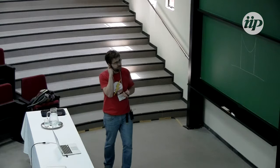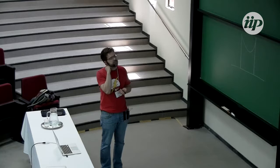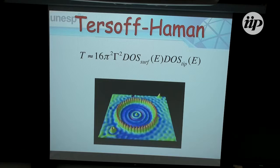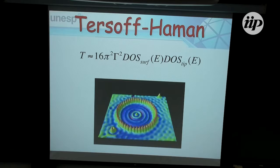Somebody might ask: if you're talking about tunneling, where is the tunneling — shouldn't there be an exponential term in your transmission or current associated with the distance between tip and surface? Here there's no explicit exponential term between tip and surface. Actually, this exponential term is in the gamma: if you think about two hydrogen atoms, the 1s state of the hydrogen atom has an exponential tail. The overlap between two hydrogen atoms — the coupling — is somewhat exponential. So there will be an exponential dependence of gamma with the distance between the tip and the surface.